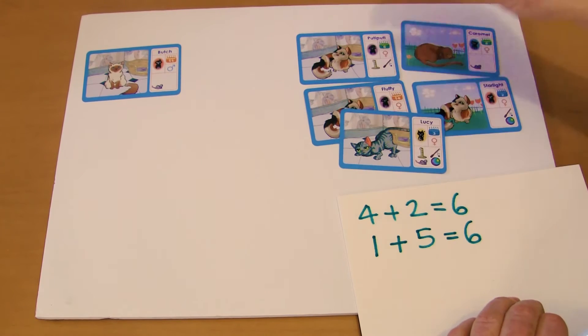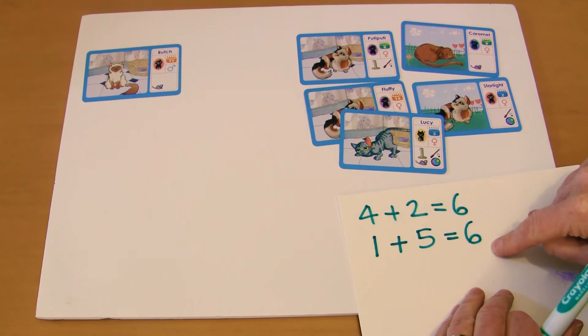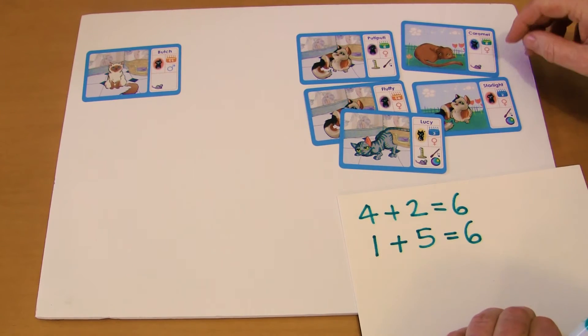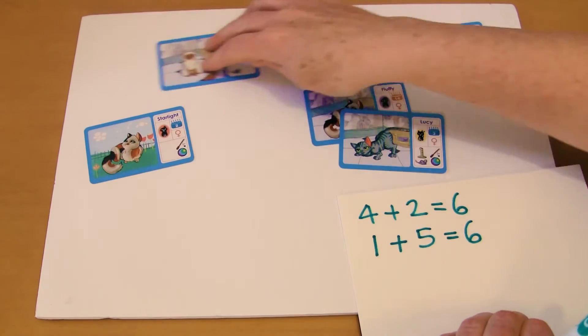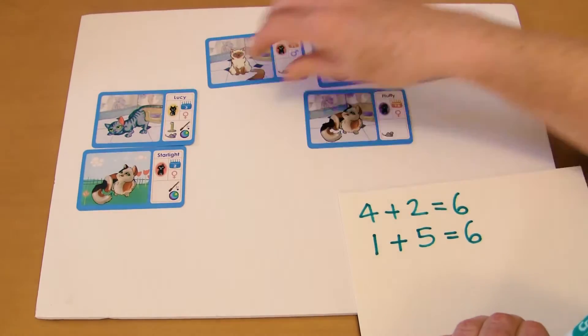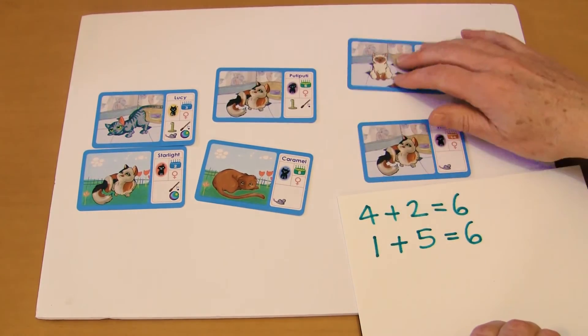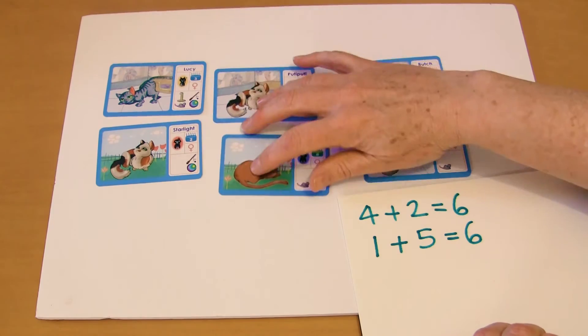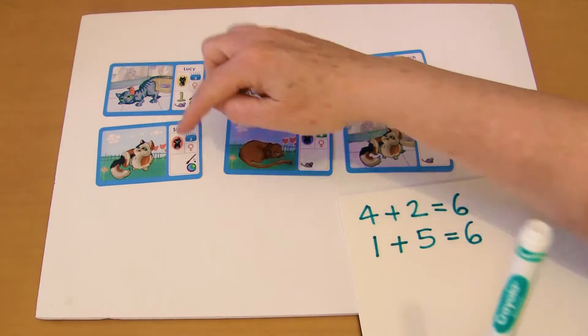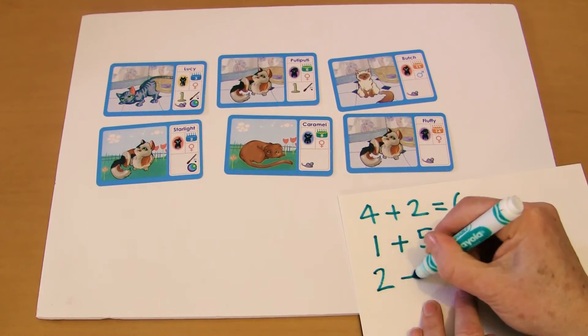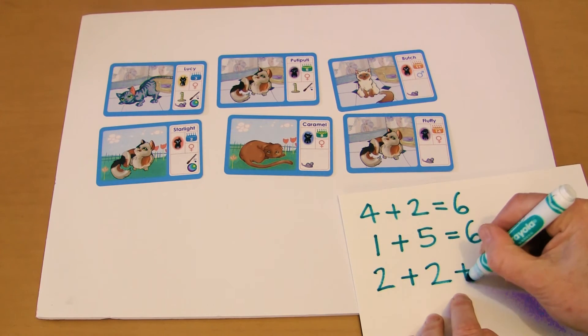Or we might look at, so that was indoor, outdoor and that was gender. Or we could look at their cake colors. So we've got the blue cakes here. One, two. And then we've got two green cakes and two orange cakes. So we've got two plus two plus two.